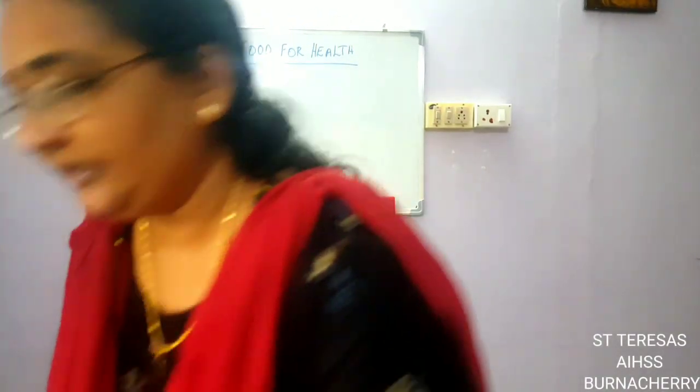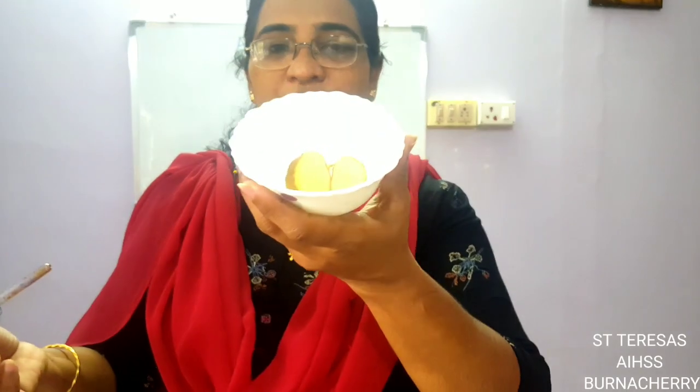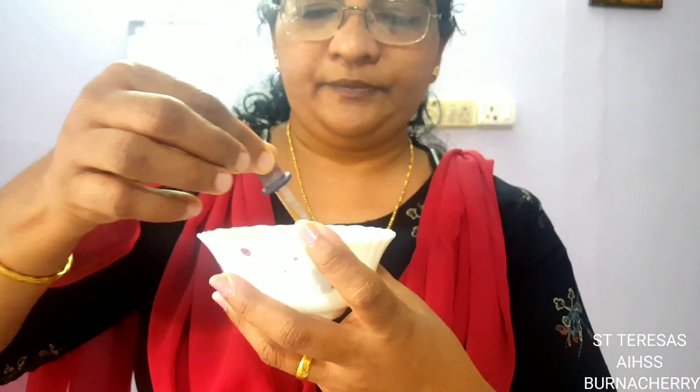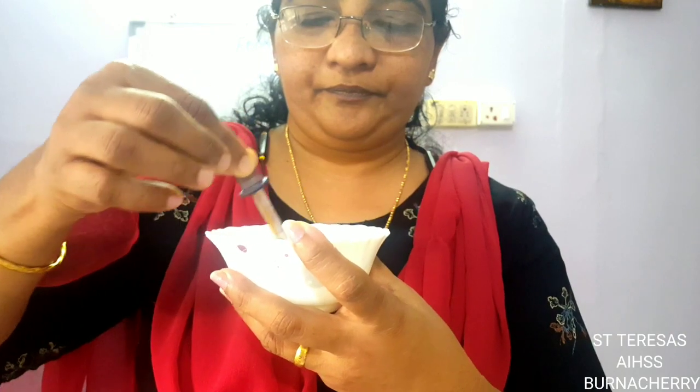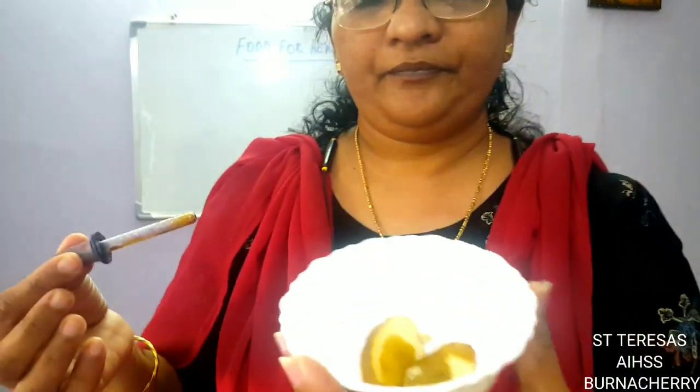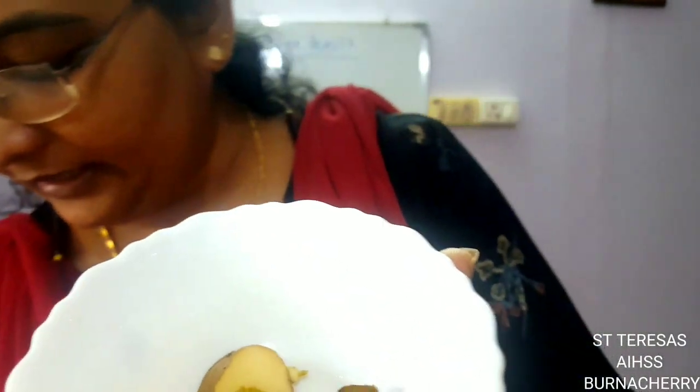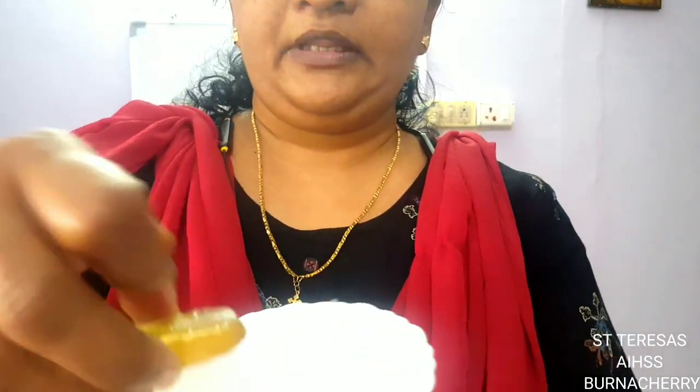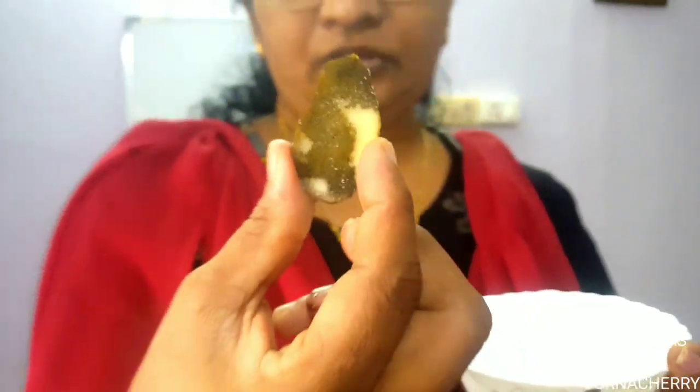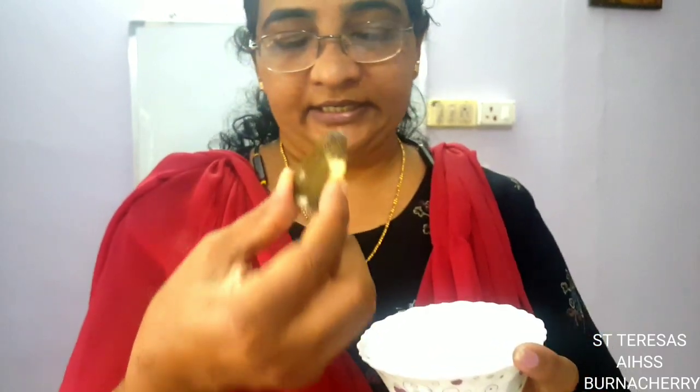Rice comes under cereals. Now I am taking potato, which comes under tubers. I have taken potato and I am adding a drop of iodine to it. This potato has also changed its colour to dark blue. So potato also contains carbohydrate — it contains starch.